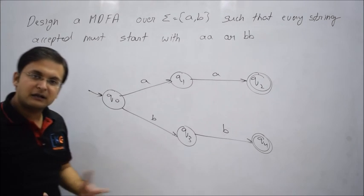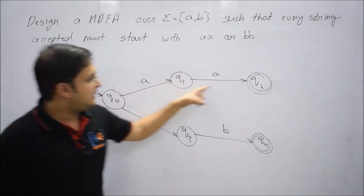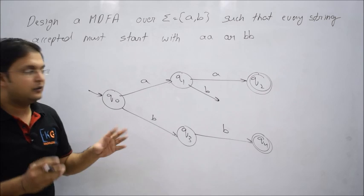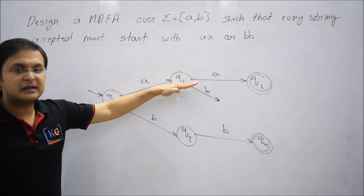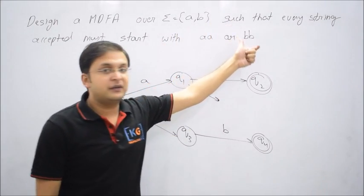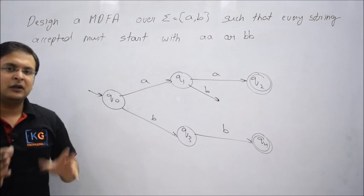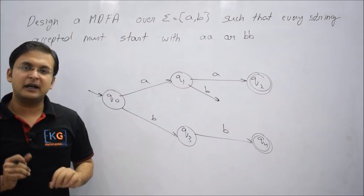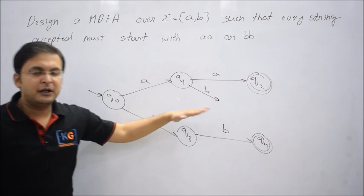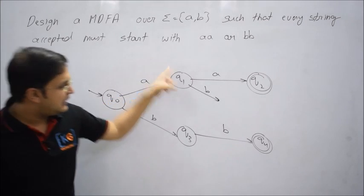q0 is already completed. Now let's go to q1. On 'a', it goes to q2. But what if 'b' comes on q1? You cannot change party — if you have already started with 'a', the second symbol must also be 'a'. Since the condition is about starting, do we require a dead state? Yes. At the very start you know whether the string is going to be accepted or not. If a string starts with 'ab', no matter what comes after, it will not be accepted.